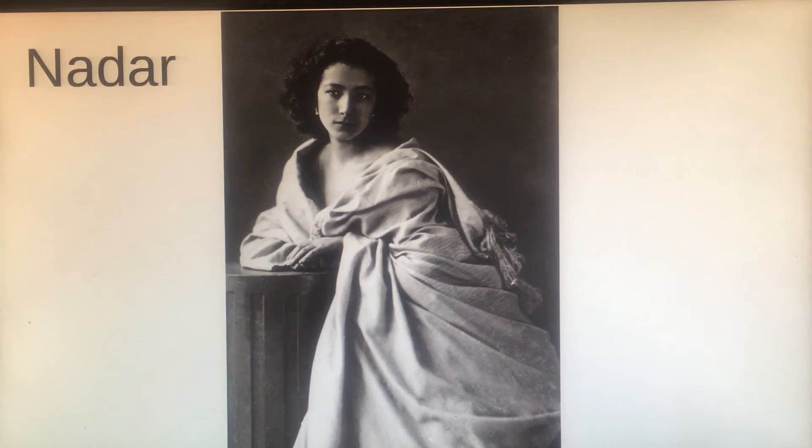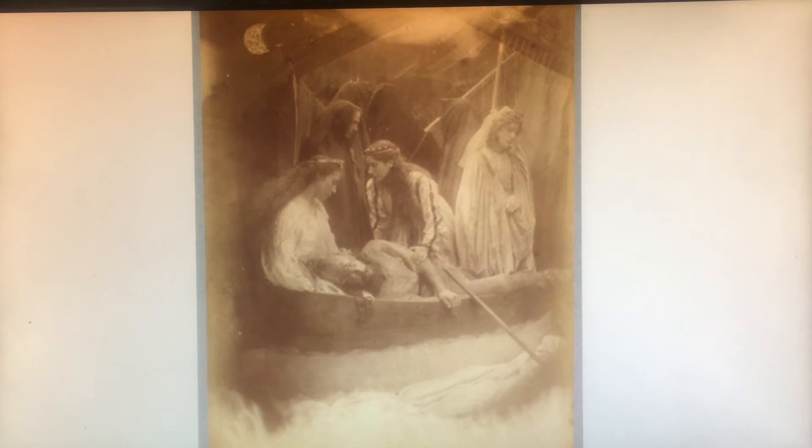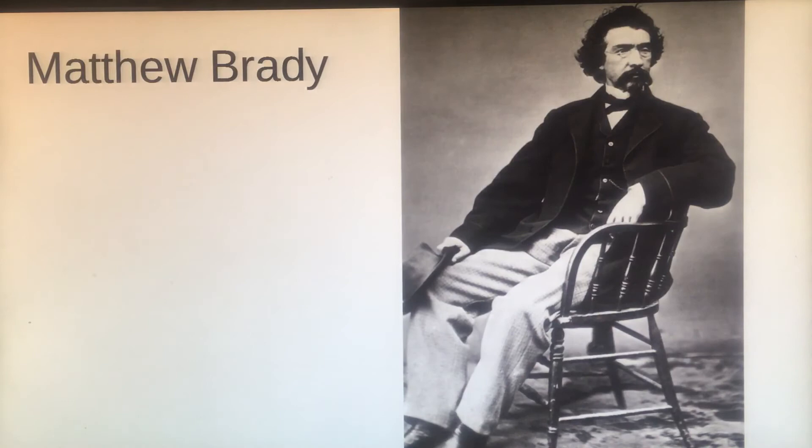Julia Margaret Cameron was a pretty amazing woman. She did photographs that were truly telling stories about people in a different way — something nobody had thought to do before. And then she worked with the collodion wet plate process, which was a much simpler process than the daguerreotype.